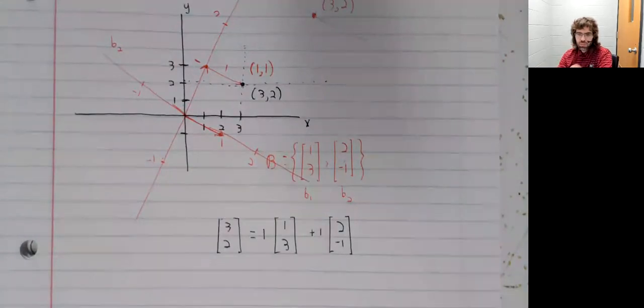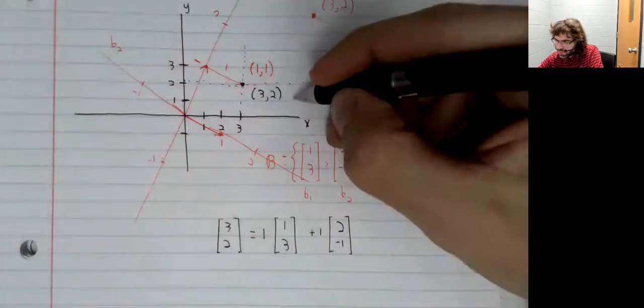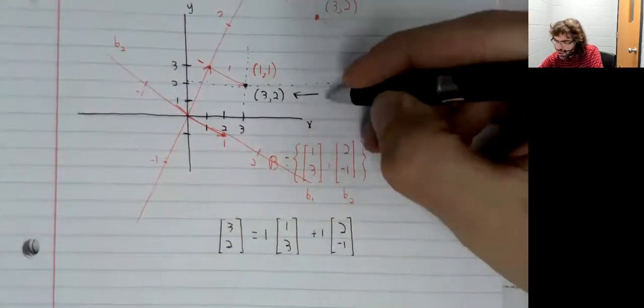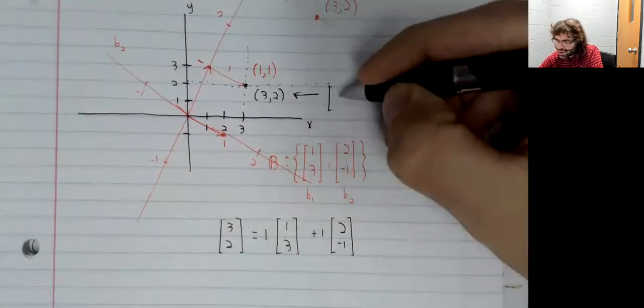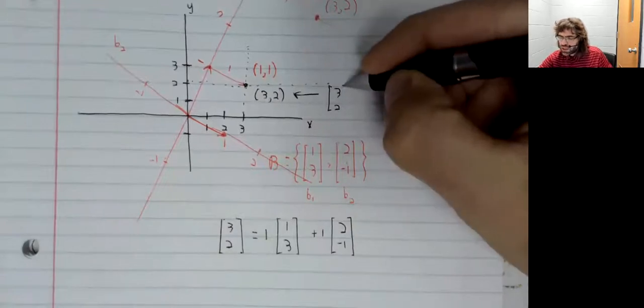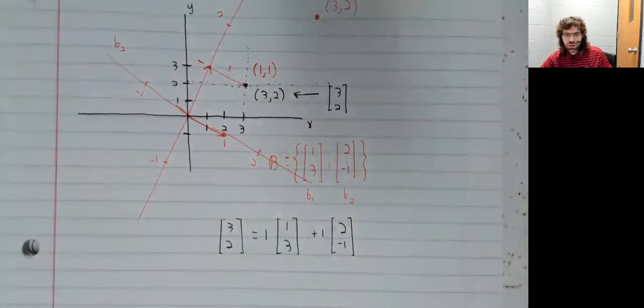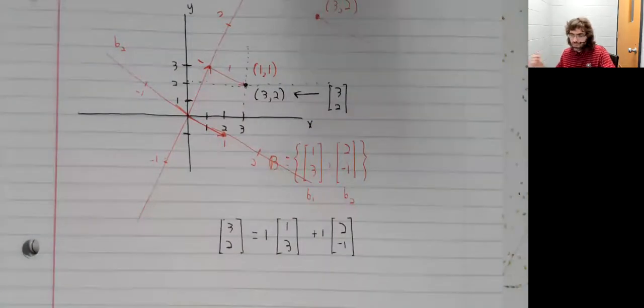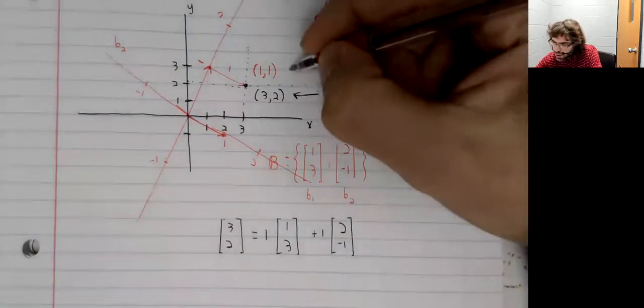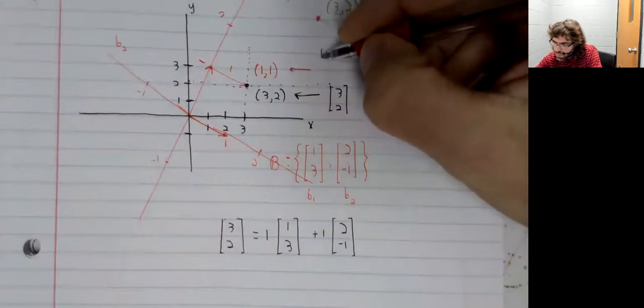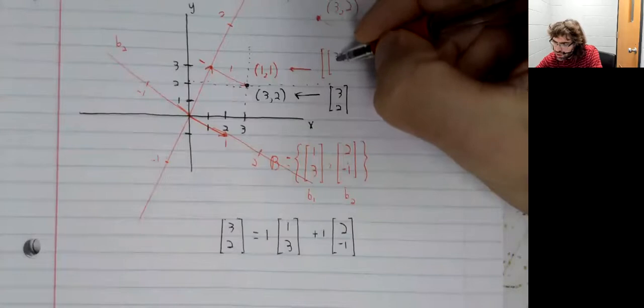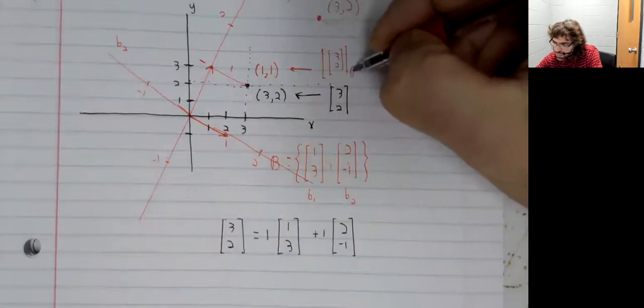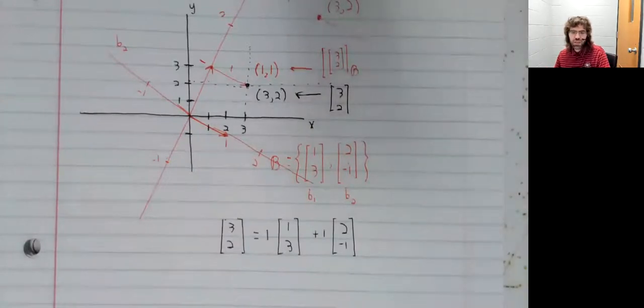In other words, if now thinking of this point as a vector, this is the coordinate. I mean, that same vector with respect to b.